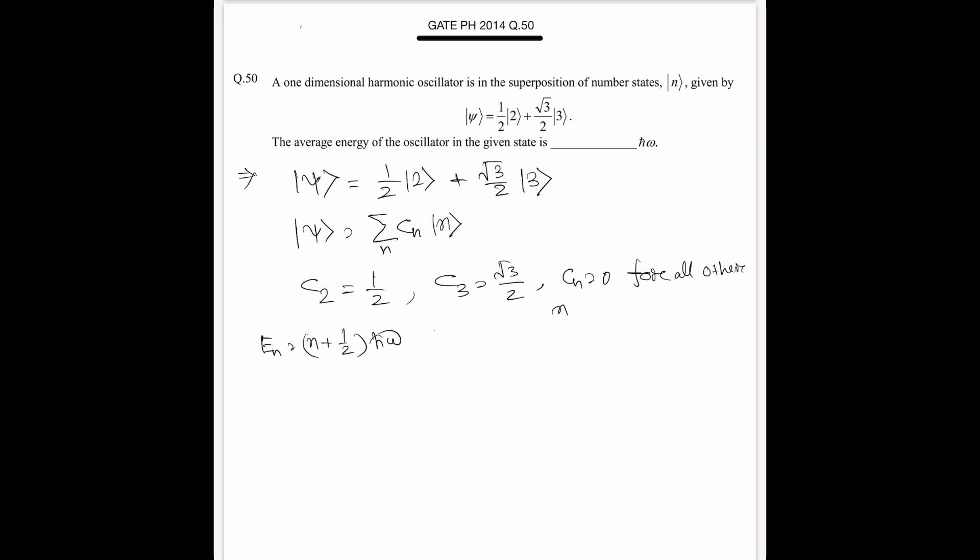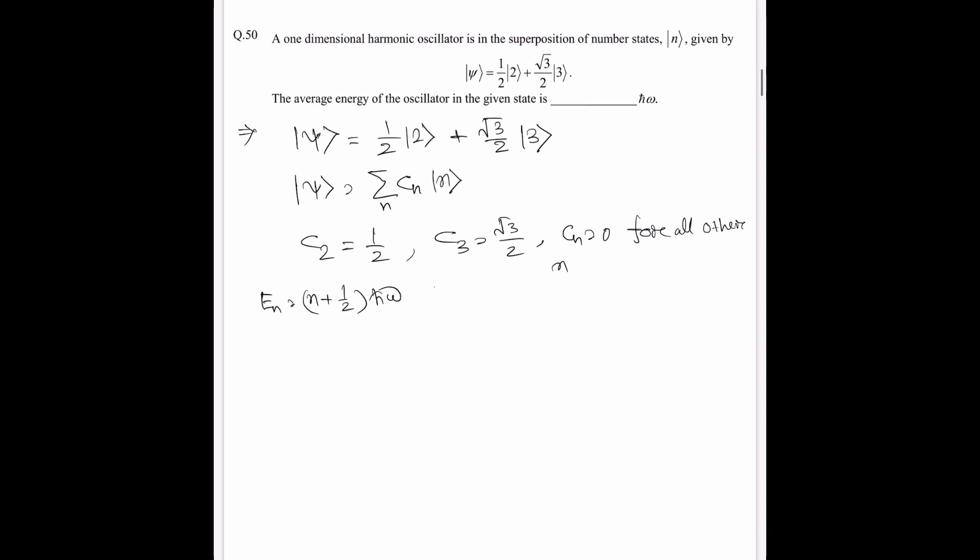En = (n + 1/2)ℏω, so E2 is (2 + 1/2)ℏω, that is 5/2 ℏω